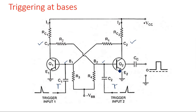In this way, we can give triggering pulses at the bases or collectors so that the particular transistor state can be changed, and the stable states can be moved into the other stable state depending upon the applied signal. This is what triggering in a binary is. Thank you.